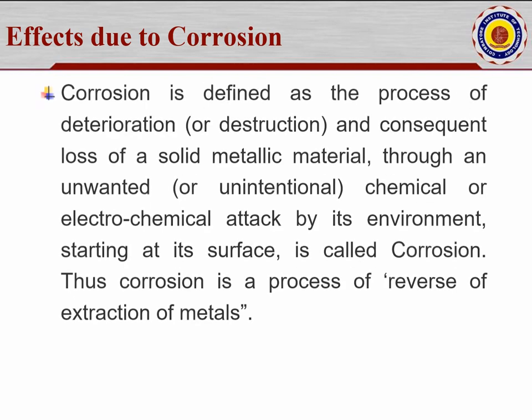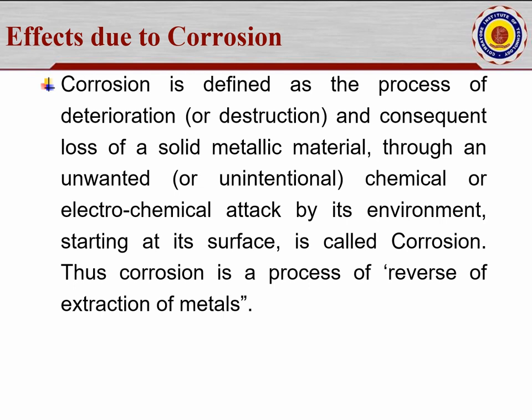Next are effects due to corrosion. Corrosion is defined as the process of deterioration and the consequent loss of a solid metallic material — that is, the steel rods — through an unwanted chemical or electrochemical attack by its environment. Through any chemical agents or admixtures added at the time of concreting, if they are added in more than the required amount, they may react wrongly. When cracks develop in columns or structures, voids develop and increase day by day, so dust particles may enter via the cracks and affect the corrosion process — the rod may start to corrode. This is termed as corrosion and is described as a reverse process of extraction of metals.